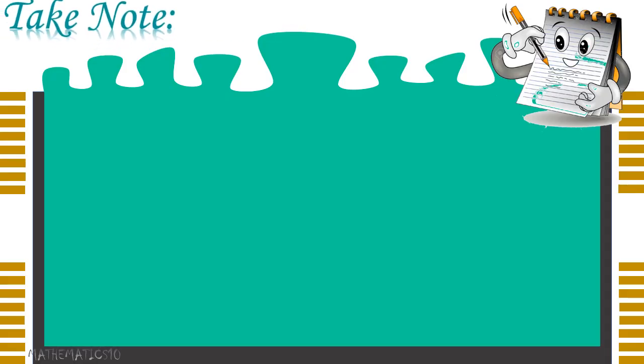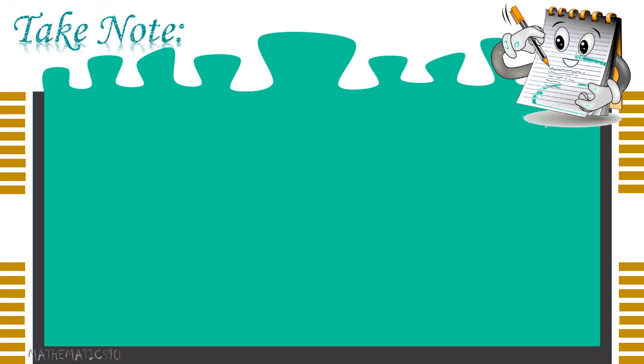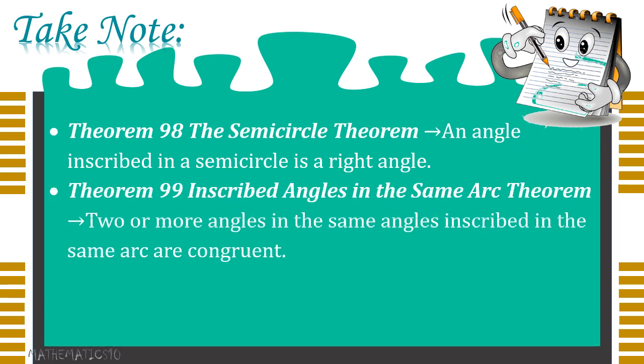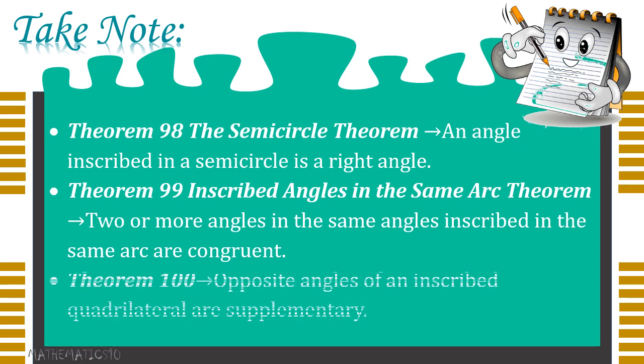So what are the theorems that we are going to talk about in this video? First, we are going to talk about theorem 98, which is the semicircle theorem. Next is theorem 99, which is inscribed angles in the same arc theorem. And lastly, we have theorem 100 about inscribed quadrilateral.